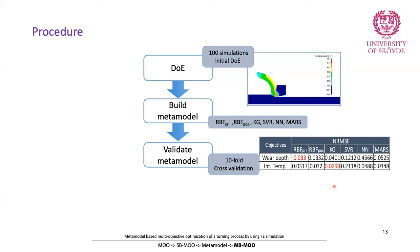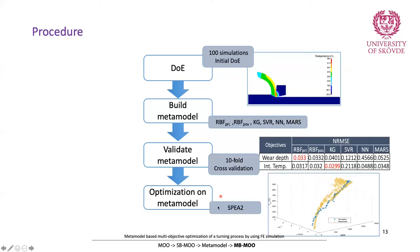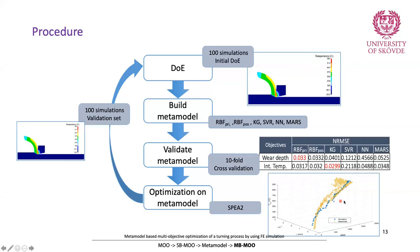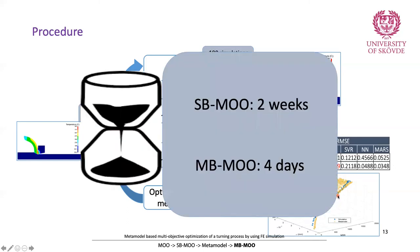Then we implemented the metamodels into the multi-objective optimization algorithm — the SPEA2 algorithm — ran it, and got the results: the same Pareto front. We selected some solutions from the Pareto front and validated them by running the actual simulation to see how accurate our results were. The simulation-based multi-objective optimization took two weeks — and this was using the framework that automated the whole process. Without the framework it would have taken around two months. But using the metamodel, we only ran 200 simulations and the study was finished in four days.